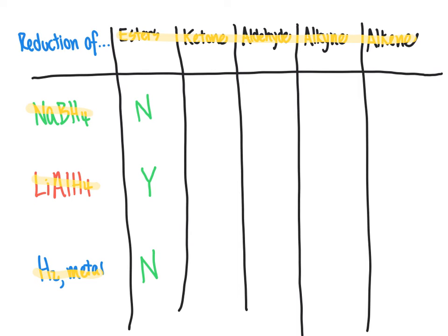When we look at the ketone column, can ketones be reduced by sodium borohydride? The answer is yes. Ketones can also be reduced by lithium aluminum hydride, and they can also be reduced with hydrogen metal. Aldehydes are going to be the same as ketones, so it's yes all the way across the board. Alkynes are not reduced by hydride reagents. They are reduced by hydrogen with a metal catalyst. Same thing for alkenes.